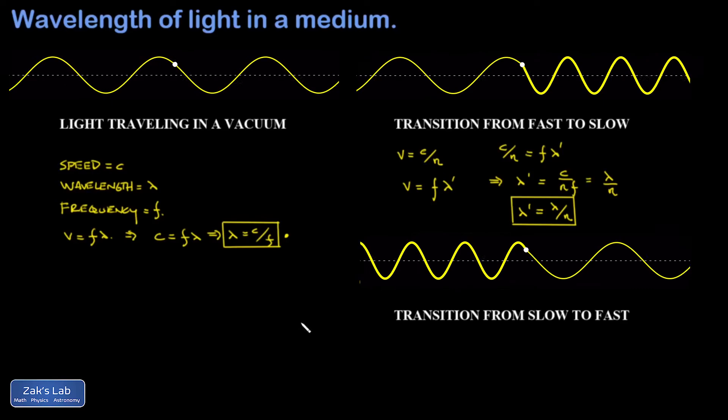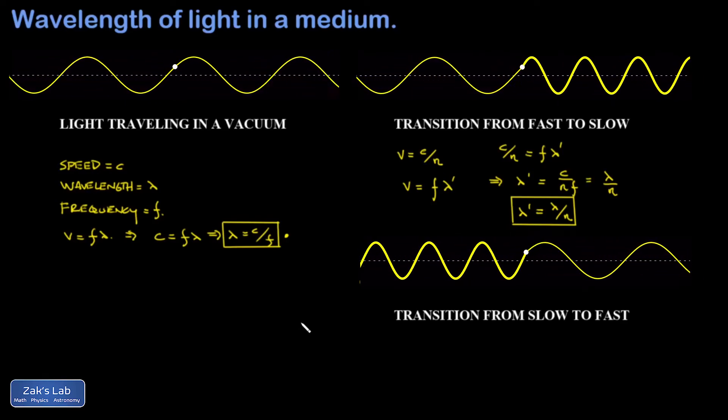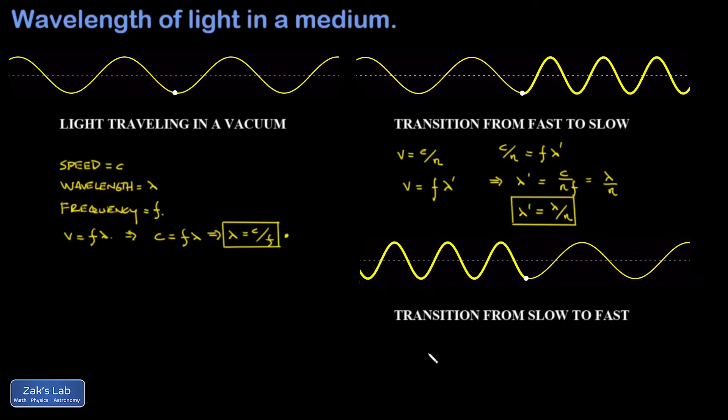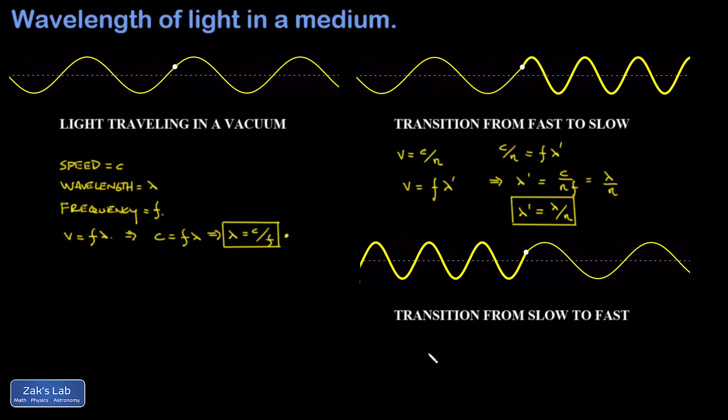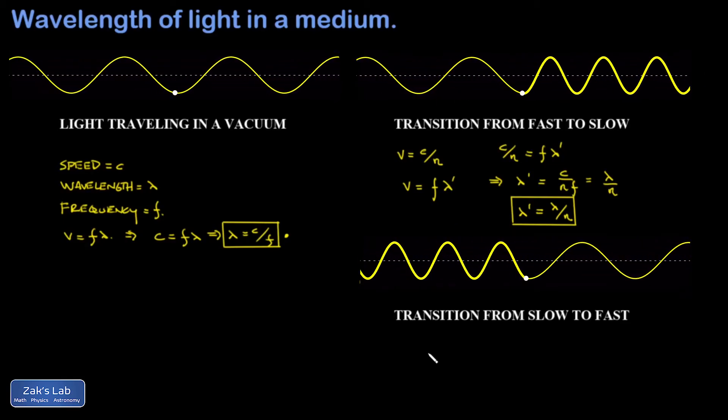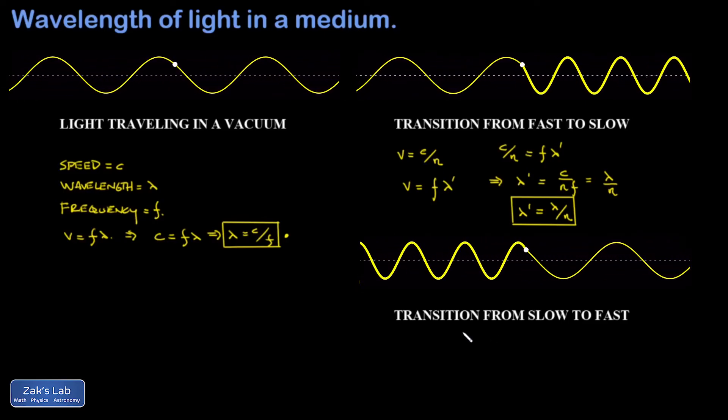For the sake of completeness, on the bottom right-hand side, we have a transition from a slow medium to a fast medium. And again, what's changing here is not the frequency. I can see the frequency of each wiggle is the same by watching that white dot at the interface between the two materials.